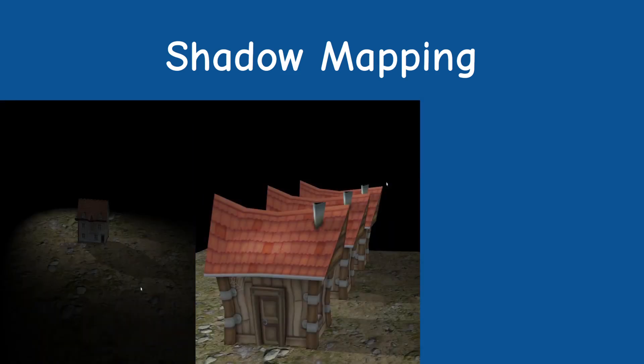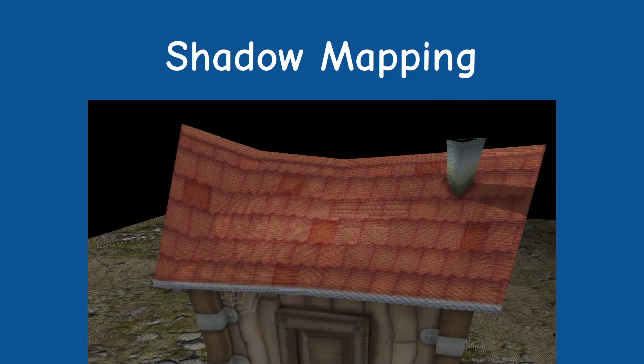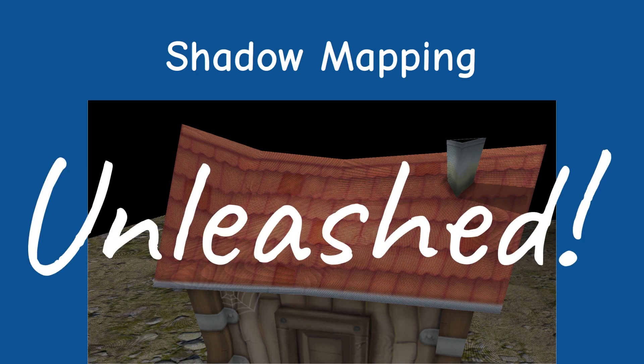Hi guys! Welcome back to the channel. In the last three tutorials we covered the shadow mapping technique using the basic light types: spot, directional and point light. We also witnessed some of the common problems with shadow mapping, so today I'd like to go over several techniques that can mitigate these problems to some extent.